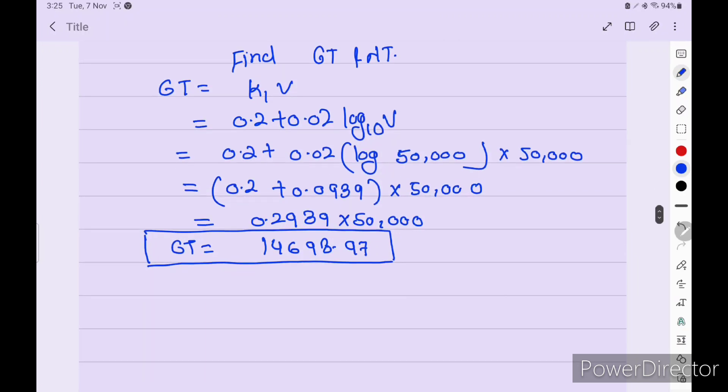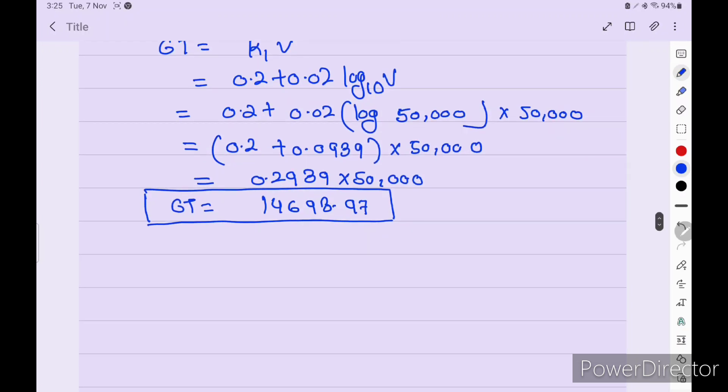So gross tonnage equals 14,698.97. There is no unit for GT and NT, so no need to write any unit, just like this answer.